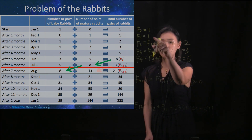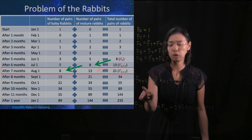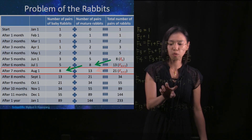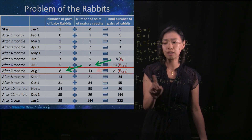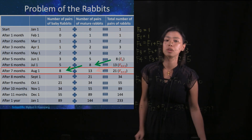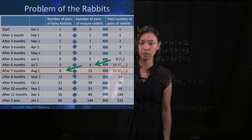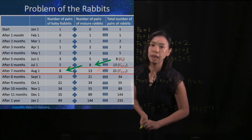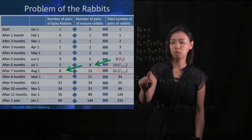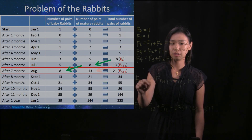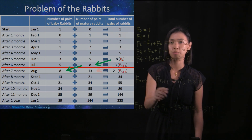With these two initial conditions, meaning that if we have F0 and F1, then we know F2. If we have F1 and F2, then we will know F3. If we have F2 and F3, then we will know F4, and so on. So this equation actually generalizes what is going on in this vertical column. The total number of pairs of rabbits in the next month would be the sum of the total number of pairs of rabbits in the previous two months.